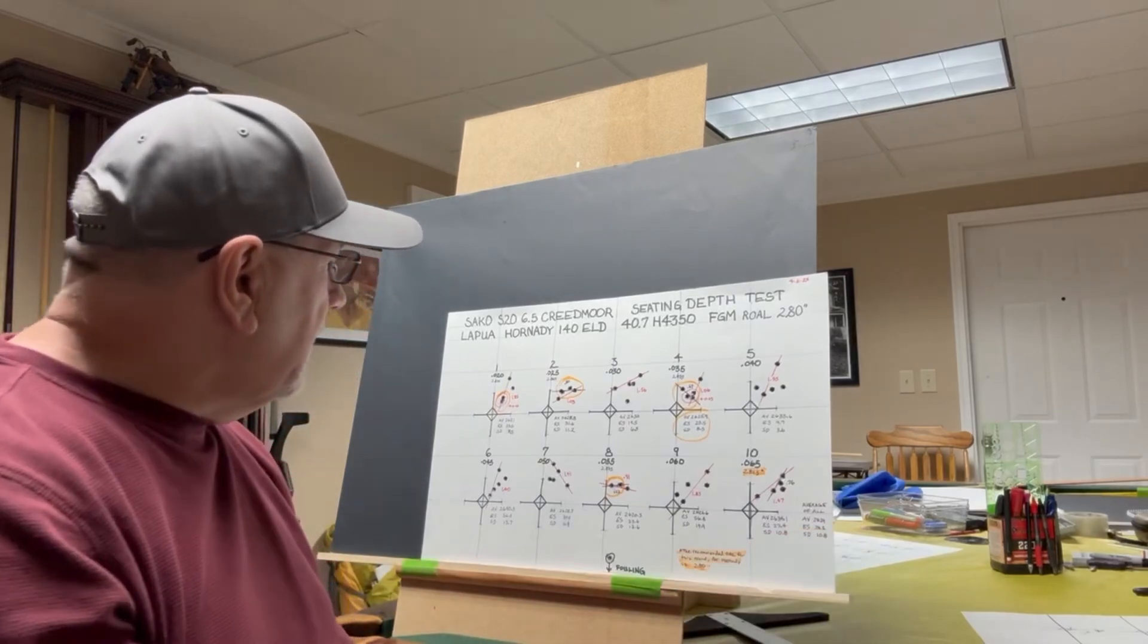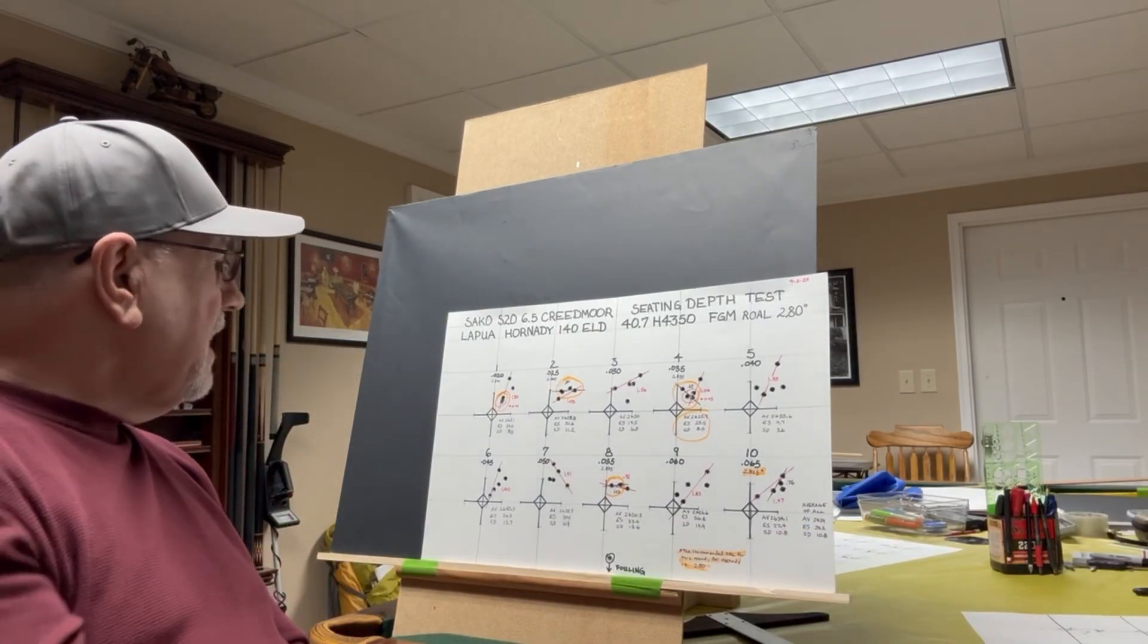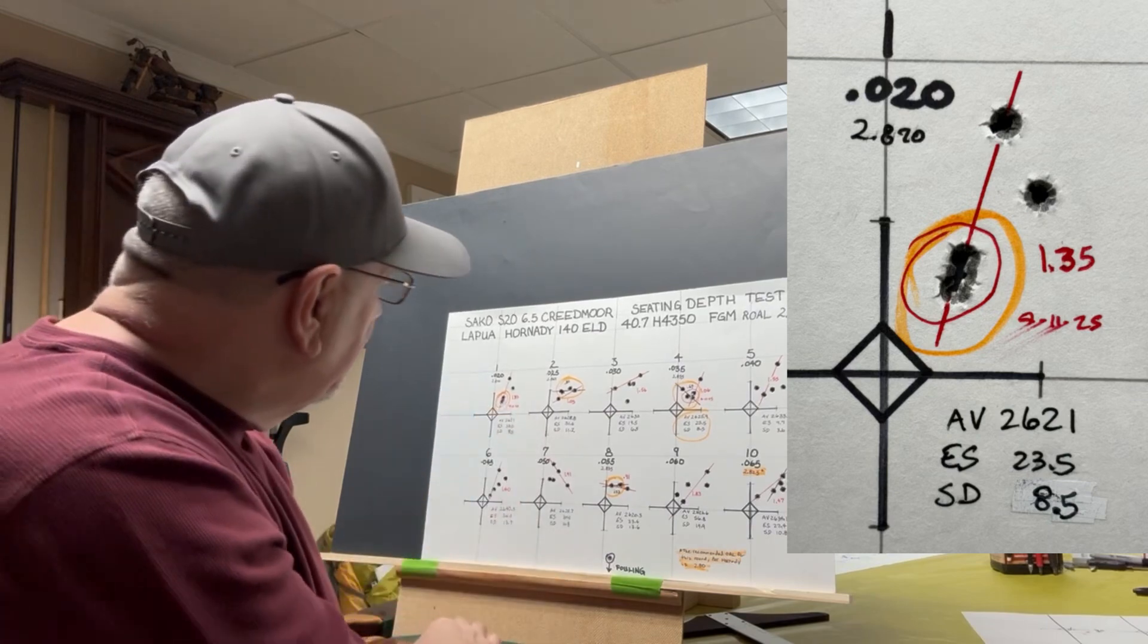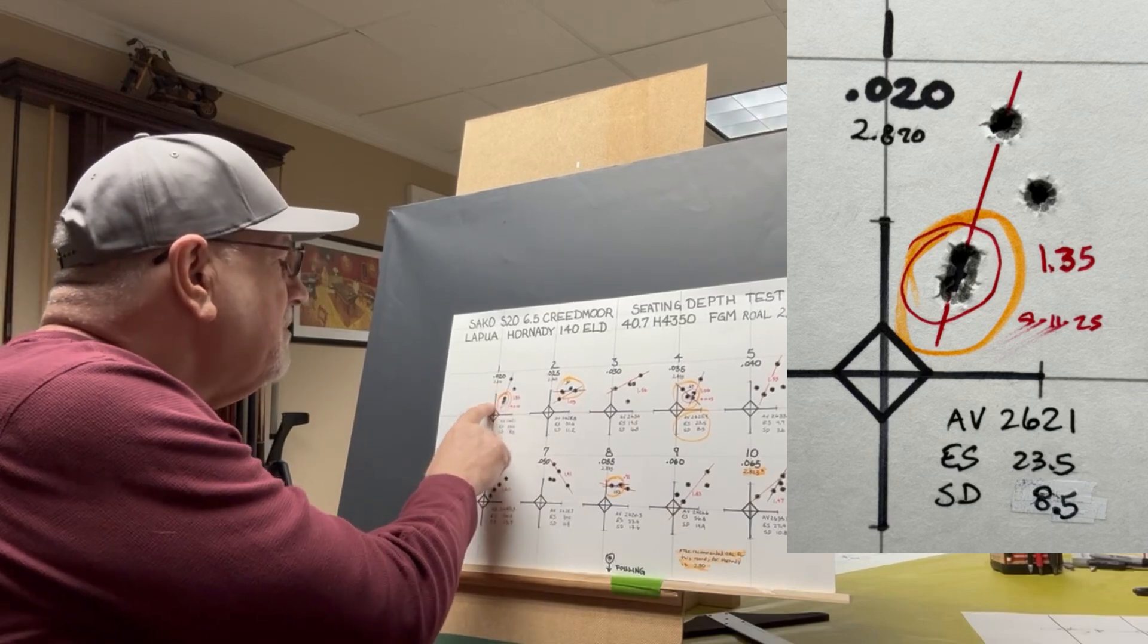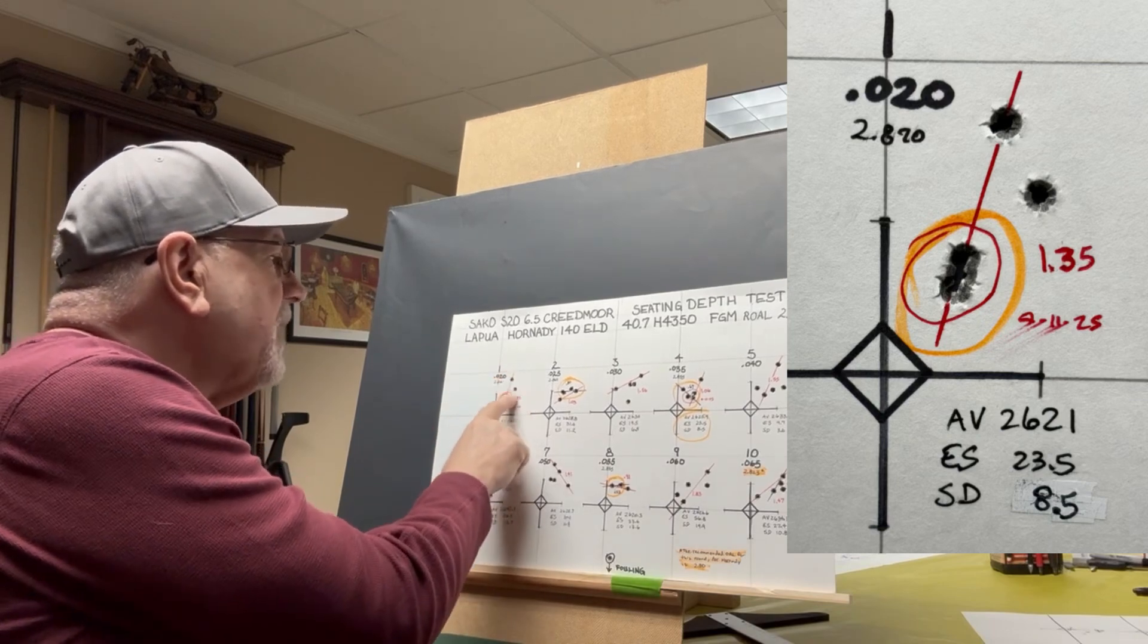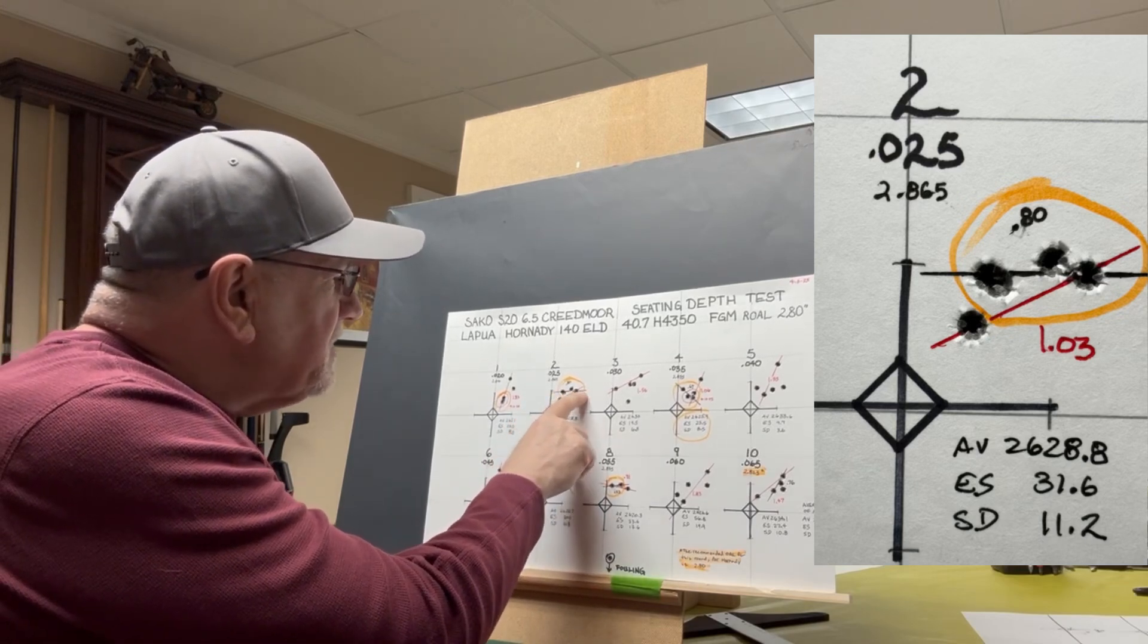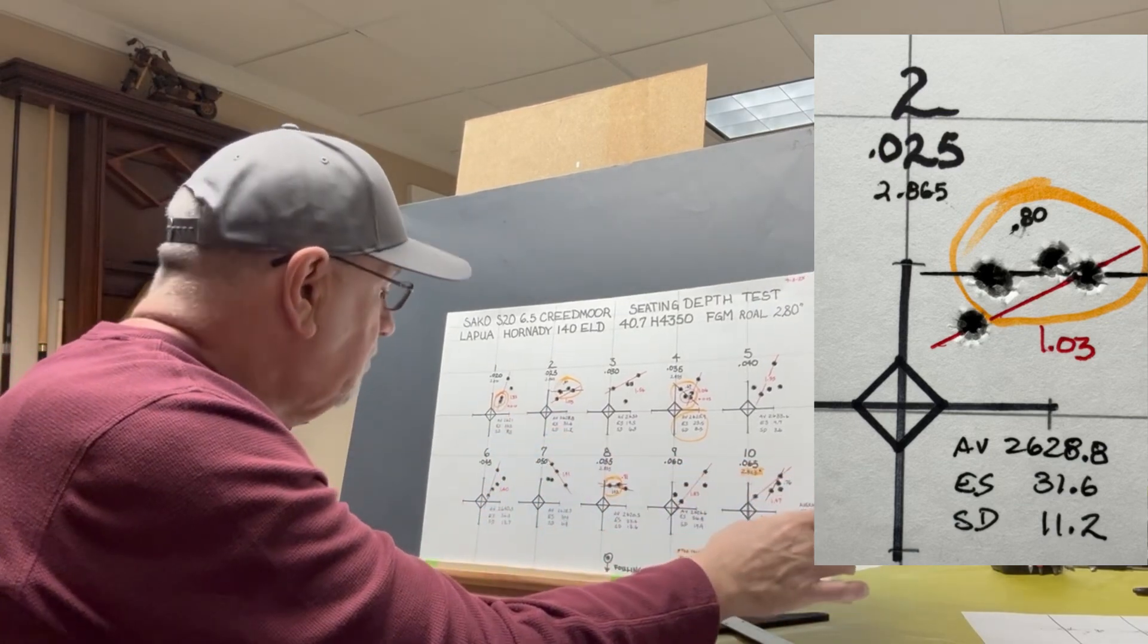Okay, so we had a few here that I think were kind of noteworthy. On our first group here, we had a 1.35 extreme spread, but you'll see that we've got three shots clustered together right here in a very small circle. We also had a standard deviation of 8.5. So that might be one that we want to come back to because that could be a couple of flyers or outliers there. At 25 thousandths off the rifling, we've got a group of 1.03, but if you look at the best four out of five, we've got a 0.8 inch group there and a standard deviation of 11.2.